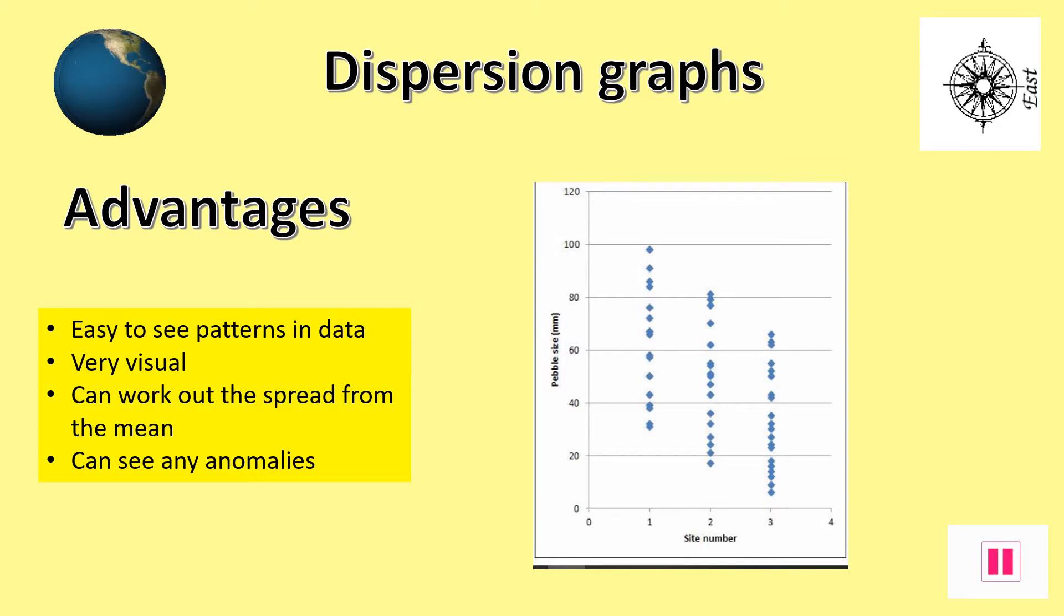Dispersion graphs have a few advantages when being used. Patterns in the data can be easily seen in a visual manner. We are able to see more clearly the statistical spread of the data and see if we have any odd anomalies in our answers. Pause the slide and note down the advantages.